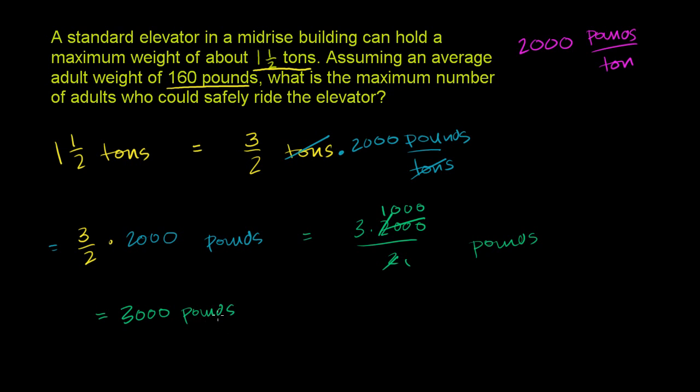If you want to make sure the units work out, we want our answer in terms of people and we want the pounds to cancel out. We have pounds in the numerator, so if we divide by pounds, the pounds will cancel out. We want to be left with people. One person weighs 160 pounds, so there's one person for every 160 pounds. The pounds cancel out and we're left with people. We're really taking 3,000 and dividing by 160, which equals 3,000 over 160 people.